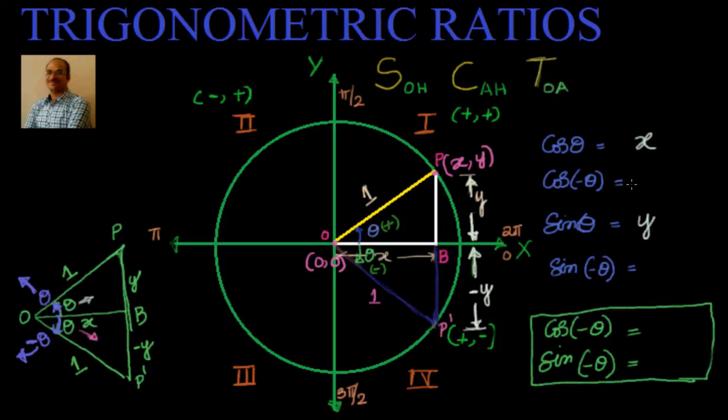Now let us come to cos of minus theta. Cos of minus theta, here I have to see adjacent by hypotenuse. That's nothing but equal to x. Whereas sin of minus theta is opposite of minus theta is minus y divided by hypotenuse is 1, so minus y.